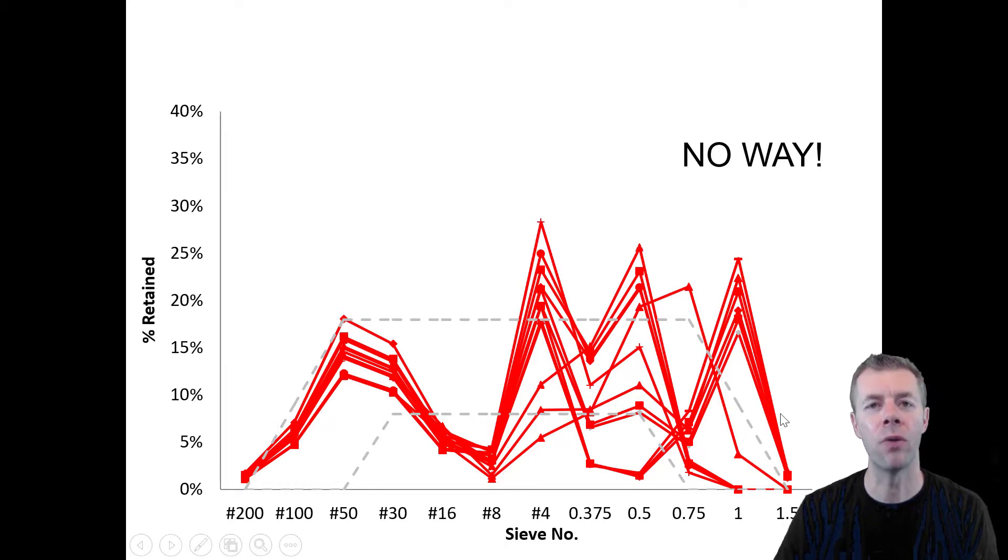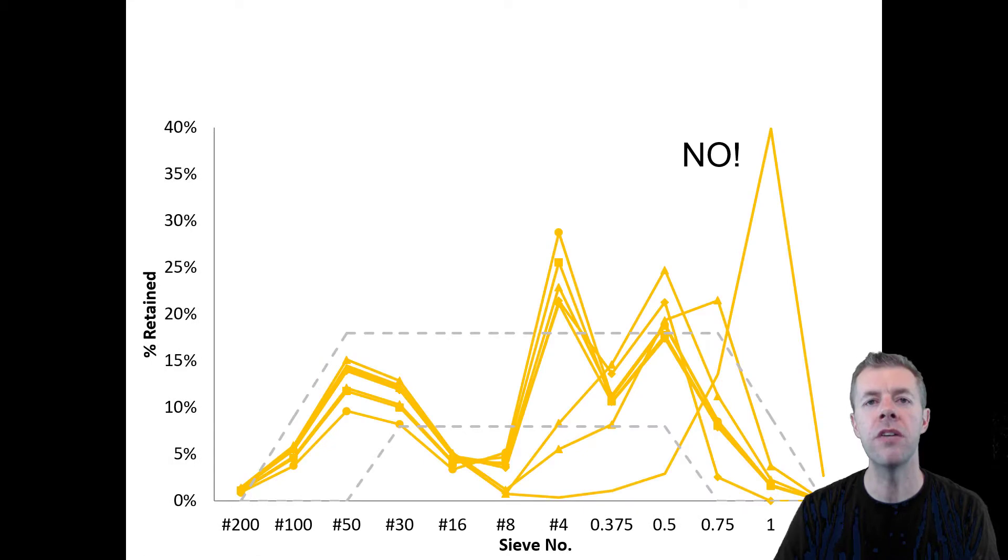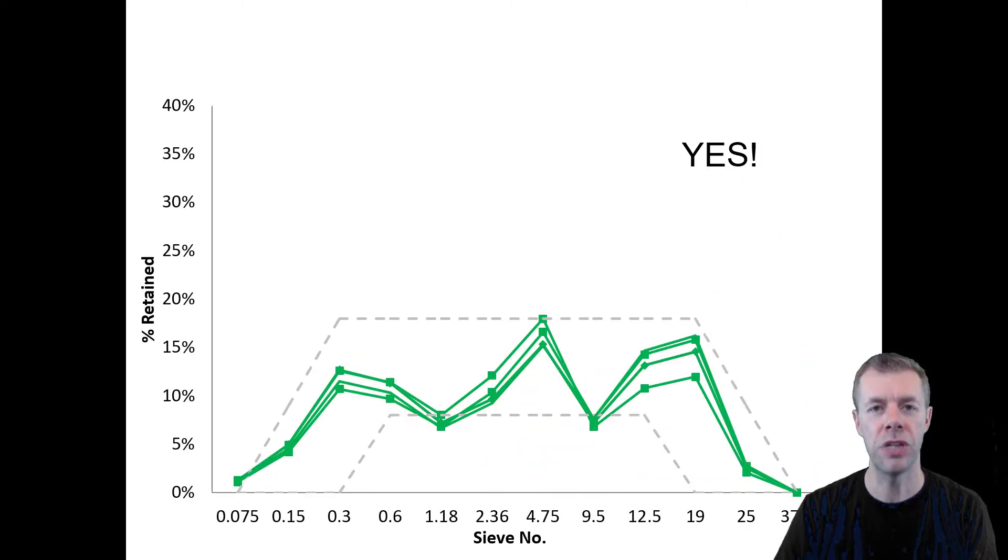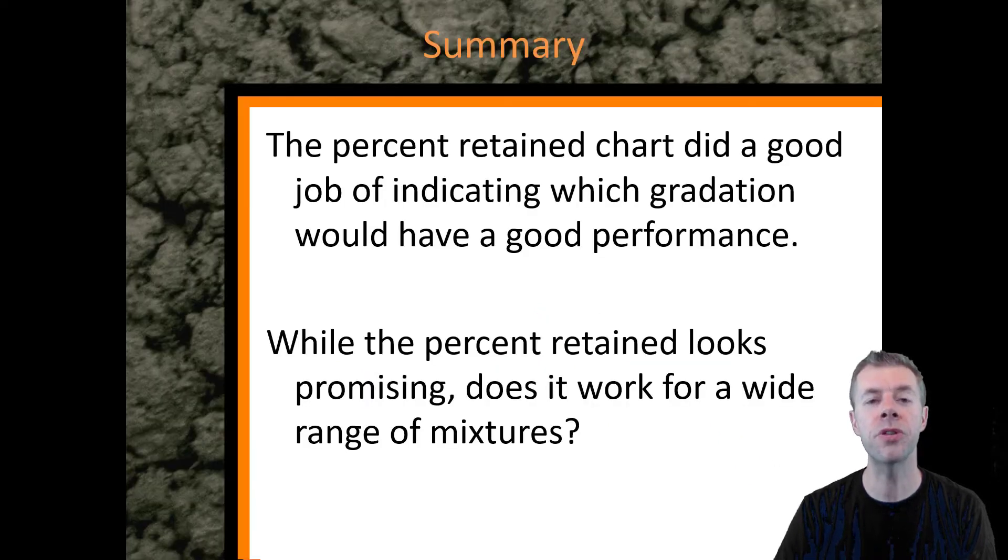For these mixtures, they're outside of the bounds. And the red means they were in the no way category. They performed awful. But if you moved into the yellow, they're also in the no category. And again, they were awful. But the data points that performed well, that was the yes category. Every one of the great performing data points fell into the percent retained chart limits. We looked at all kinds of different models out there. And the only one that seemed to be right for the majority of the time was this percent retained. So the percent retained chart did a good job of indicating which gradations would have good performance.